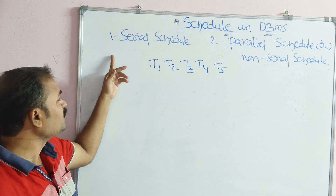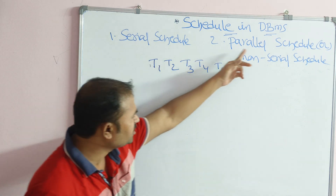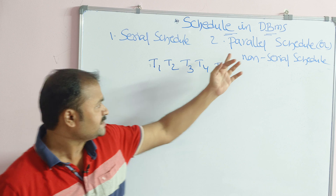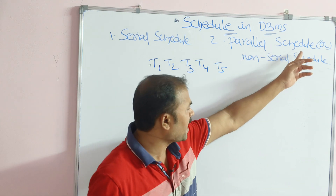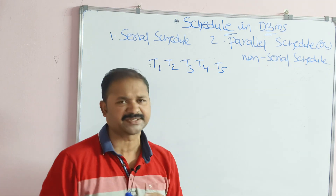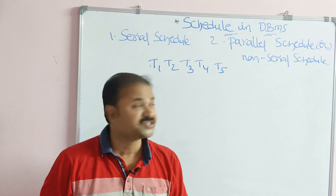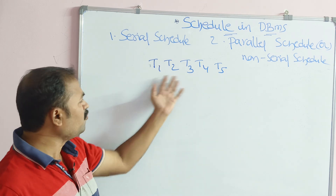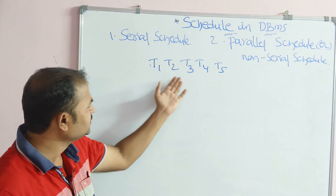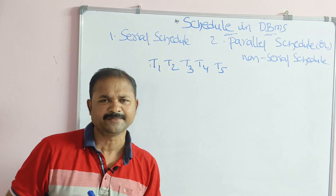We have two types of schedule: serial schedule, and the second one is parallel schedule, also called non-serial schedule. Let us say we have five transactions: T1, T2, T3, T4, and T5.